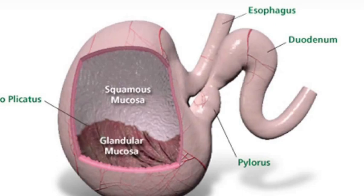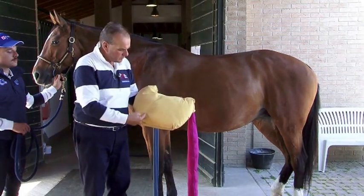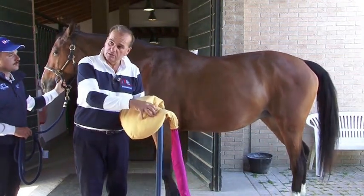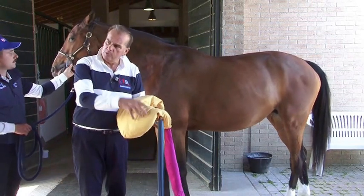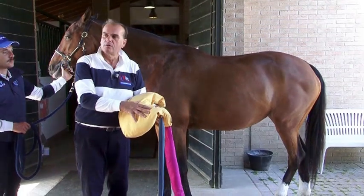Lo stomaco, se lo guardiamo dall'interno, è composto da due parti: la parte ghiandolare e la parte aghiandolare. Non è diviso esattamente a metà. La parte ghiandolare è dotata di ghiandole, quindi produce muco. Questa parte ghiandolare produce i succhi gastrici e l'acido cloridrico — una sostanza molto acida — ma produce anche muco, che è una sostanza che protegge la parete dello stomaco.